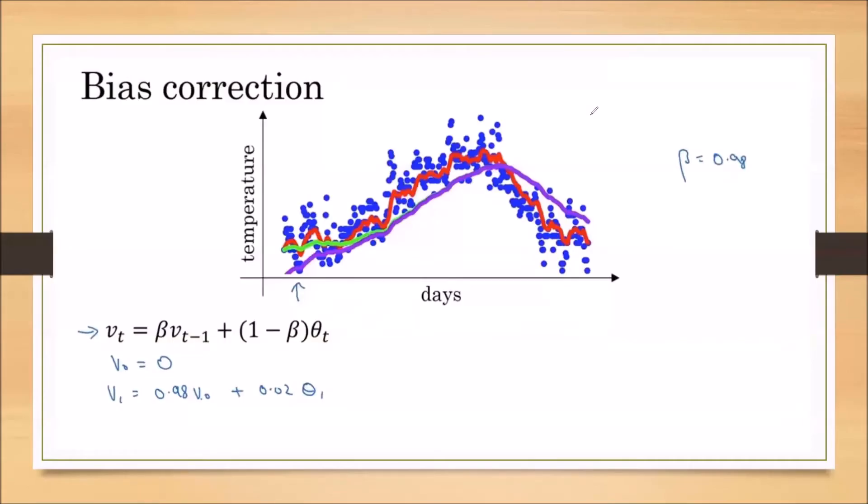Now we are discussing a small topic called bias correction. So far we have discussed exponential weighted average or moving average. The problem with exponential weighted average or moving average is, initially in the initial stages, it is failing to give the real average value.